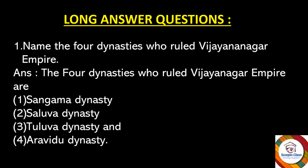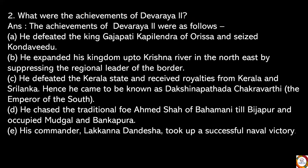First question from this chapter: Name the four dynasties who ruled the Vijayanagara Empire. Answer: The four dynasties who ruled the Vijayanagara Empire are the Sangama Dynasty, Salua Dynasty, Tulua Dynasty, and Araveru Dynasty.